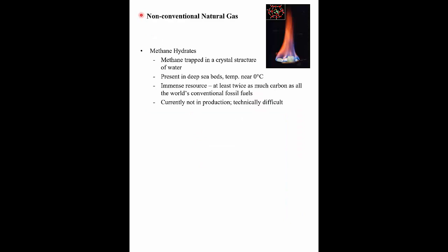There are non-conventional natural gas resources, and they're huge. One is called methane hydrates. Deep in seabeds around the world, near freezing temperatures, there is methane trapped in sediments in a crystal structure of water — called a methane hydrate. It's an immense resource: there is at least twice as much carbon in methane hydrates in the deep seabeds as in all the fossil fuels in the world combined — all coal, oil, and natural gas. The problem is it's really hard to access, deep down in the ocean.